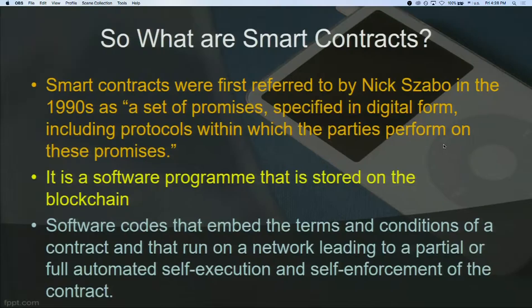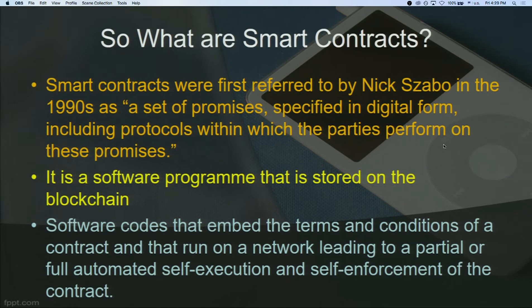Now we come to something called smart contracts. Some people call them blockchain 2.0 — they use blockchain technology as a platform. These were first referred to in the 1990s by Nick Szabo, who was both a lawyer and a computer scientist. He said smart contracts are a set of promises specified in digital form, including protocols within which the parties perform on those promises. Just imagine a normal contract that is fully or partially automated.